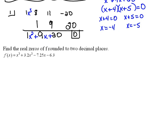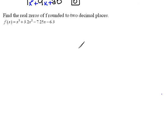Okay, here we have a problem that says we're supposed to find the real zeros of this function rounded to two decimal places.